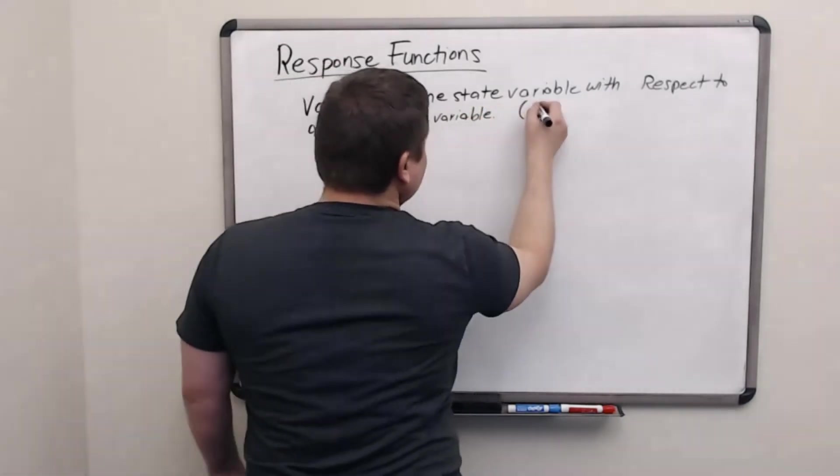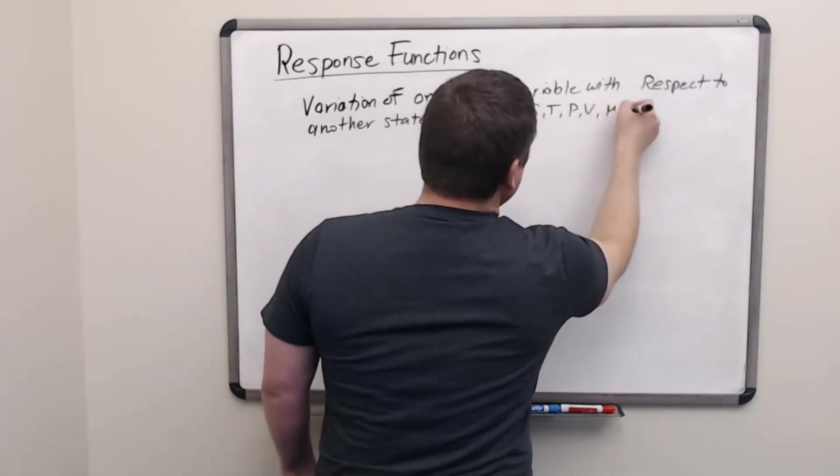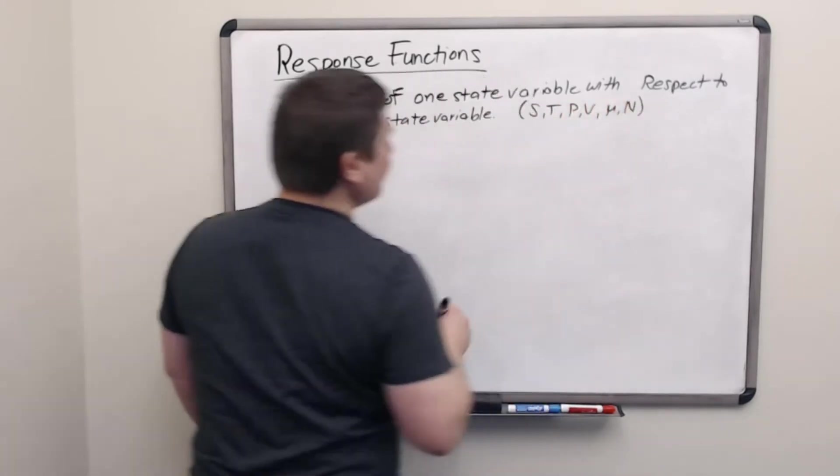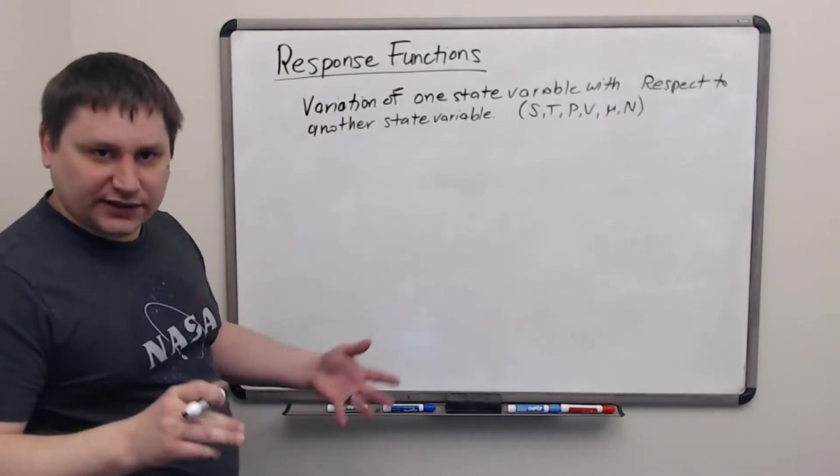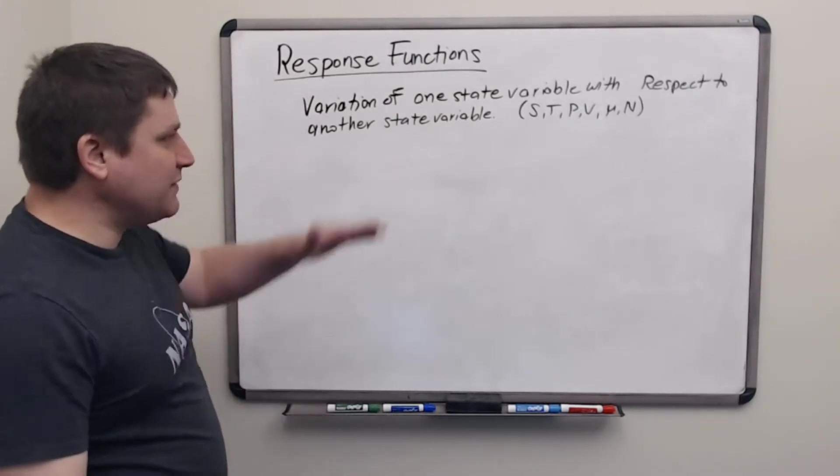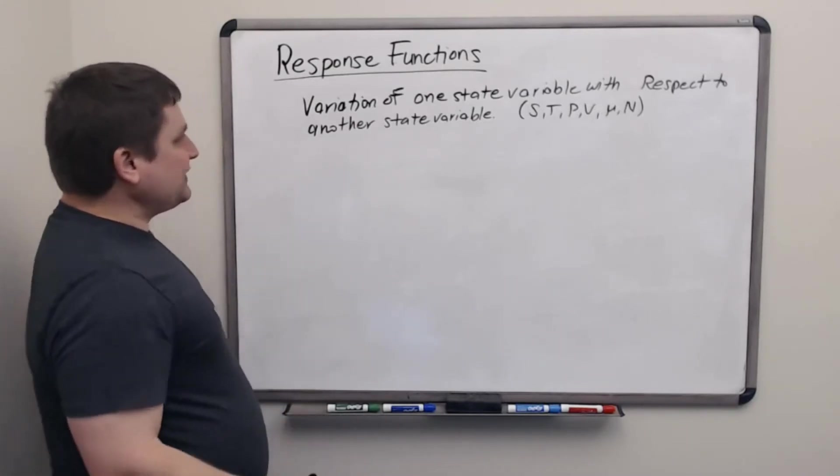Remember our state variables are S, T, P, V, μ, and N. If we have a more complicated system, then it only changes by having more μ's and more N's. So what's an example of a state variable?